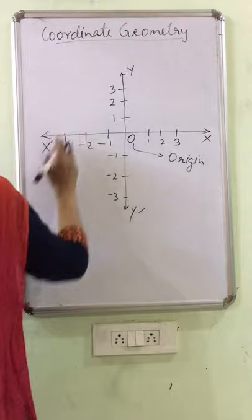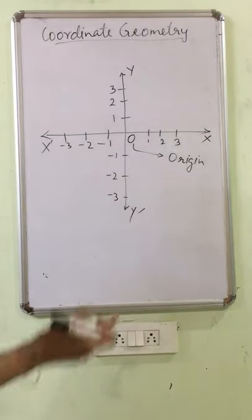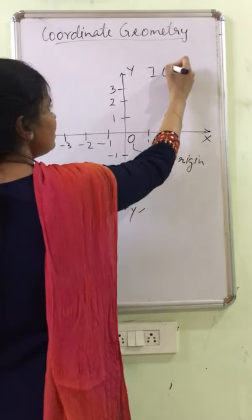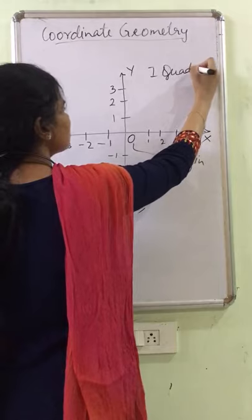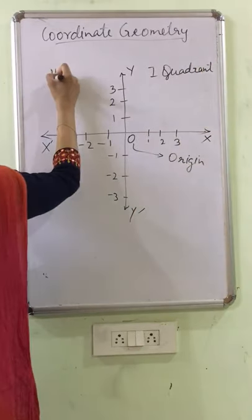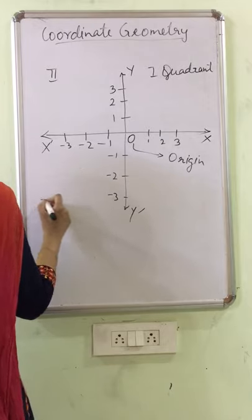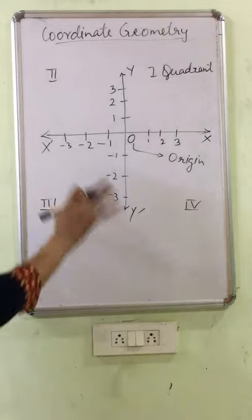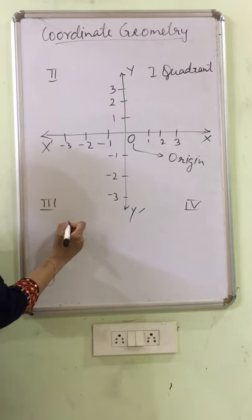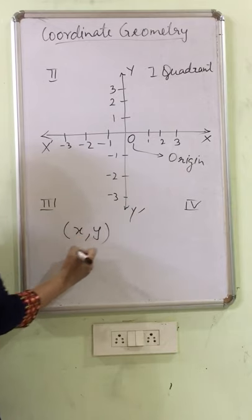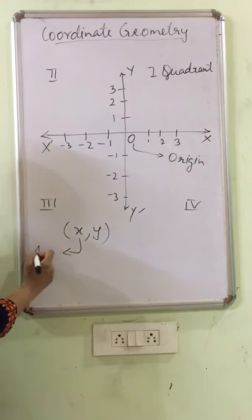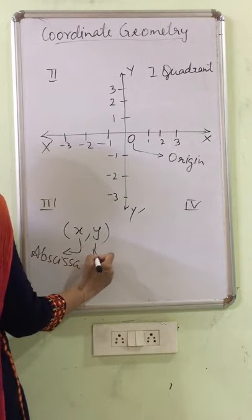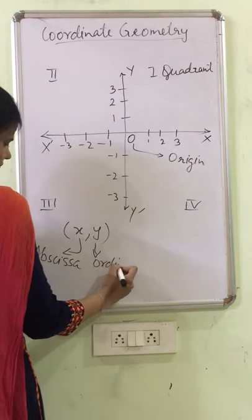As I have divided in 4 equal parts, that is known as quadrant. And here, we will take anti-clockwise. So this is my first quadrant, this is my second, this is my third, and this is my fourth quadrant. Whenever I need to plot the points on the graph, I need x-coordinate and y-coordinate. X-coordinate is also known as abscissa, and y-coordinate is also known as ordinate.